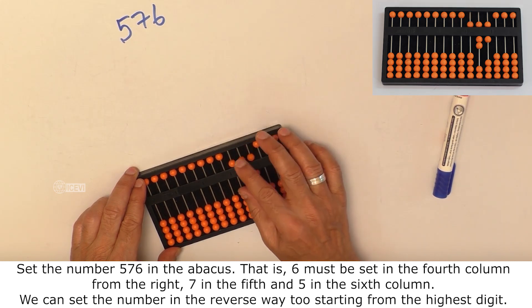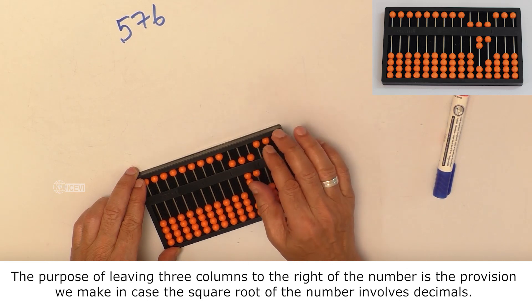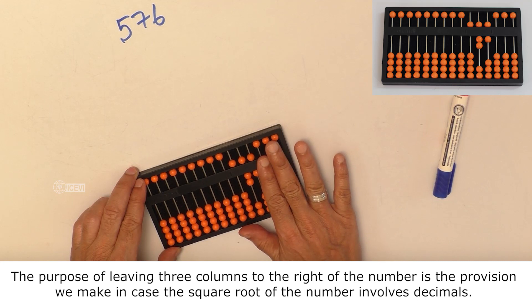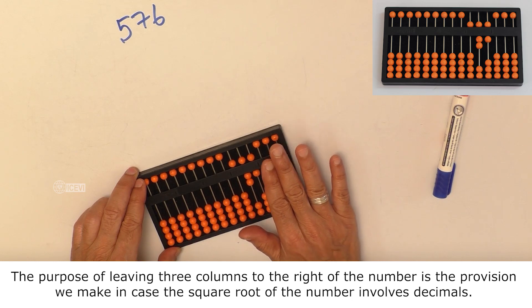We can set the number in the reverse way too, starting from the highest digit. The purpose of leaving 3 columns to the right of the number is the provision we make in case the square root of the number involves decimals.